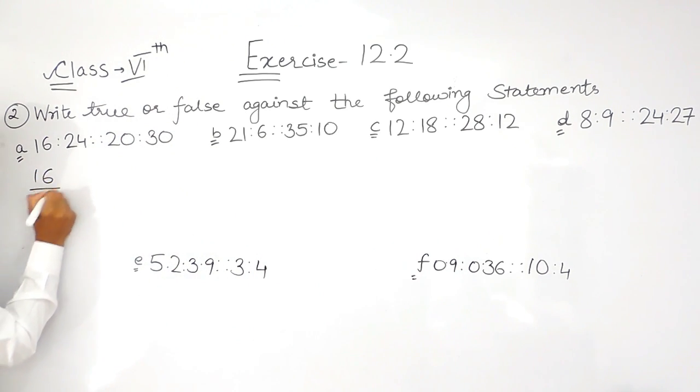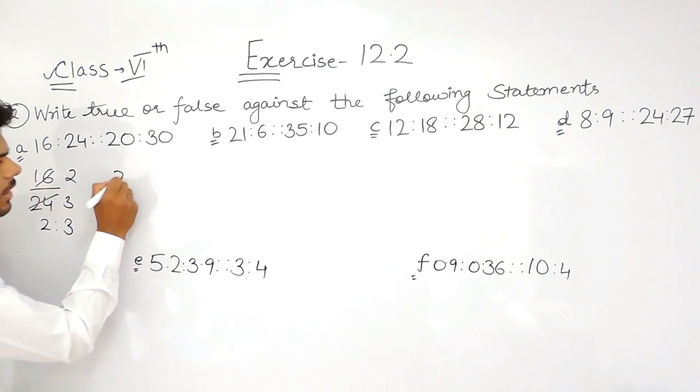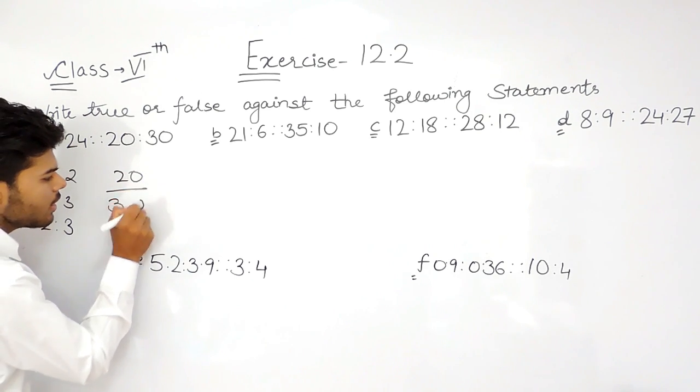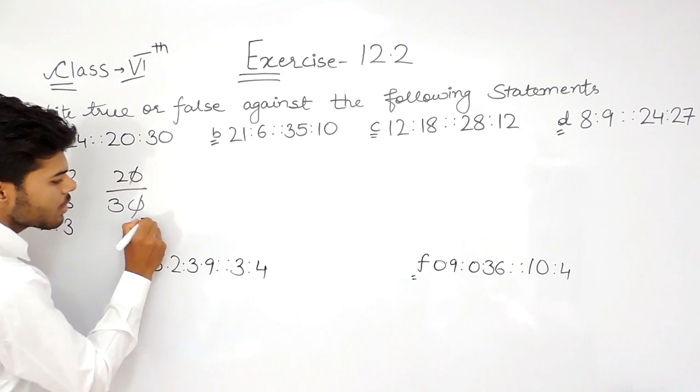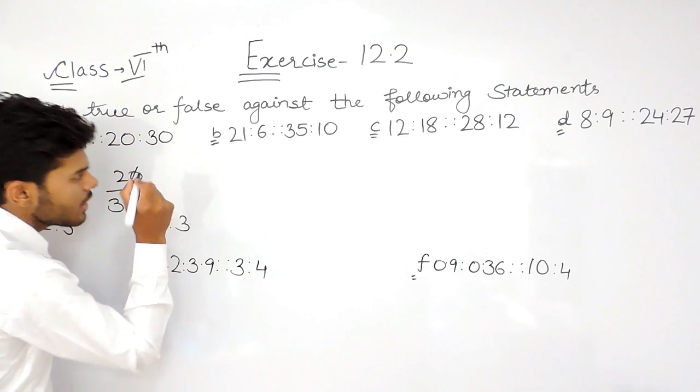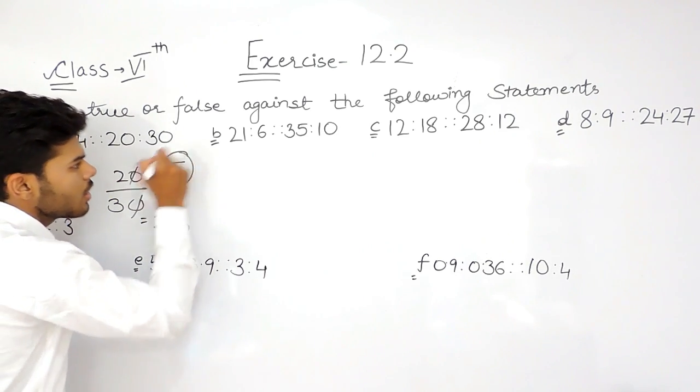So the ratio of 16 and 24: 2 times 8 is 16, 3 times 8 is 24, that is 2 ratio 3. And the ratio of 20 and 30, this gets cancelled out, so that is again 2 ratio 3. So this statement is true.